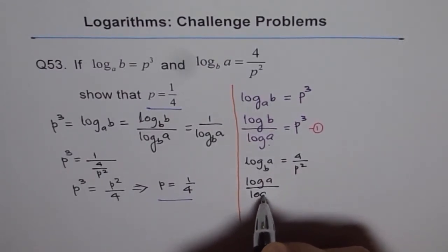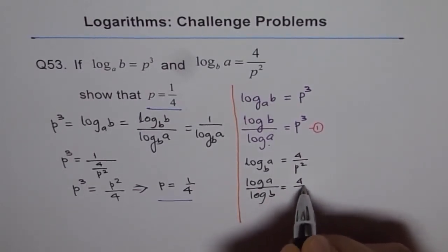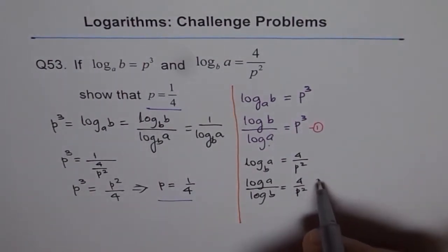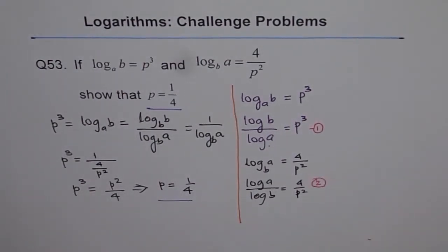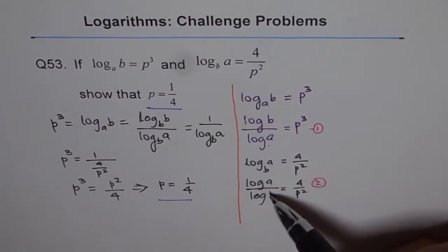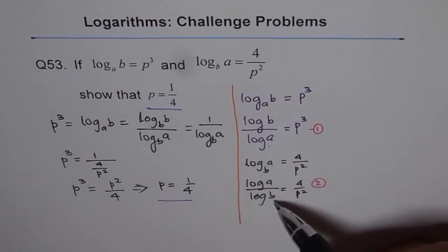So that is my equation number 2. Now, if I multiply equation 1 and 2, log B of A divided by log A times log A over log B, I get 1 on the left side. So let's do that.